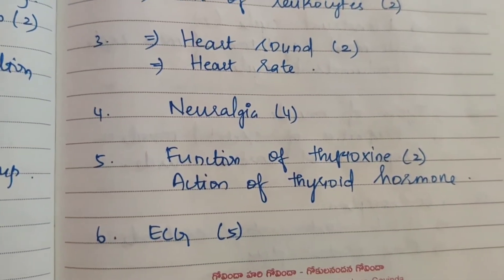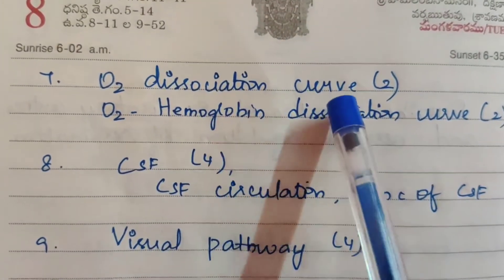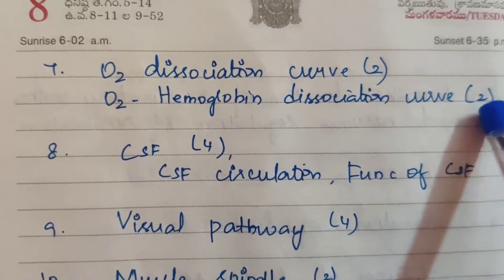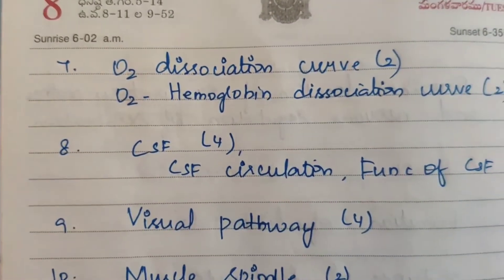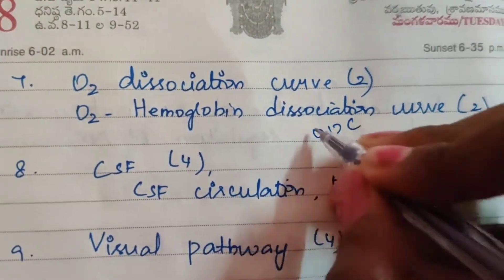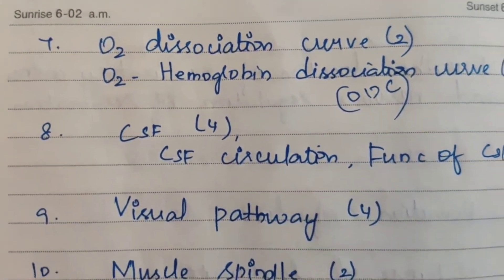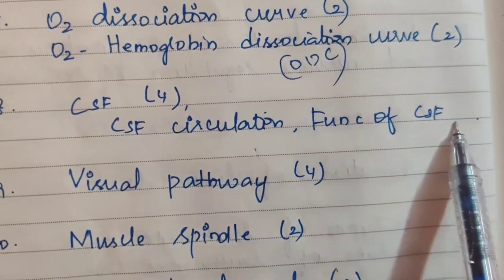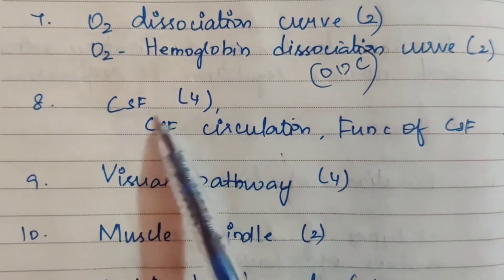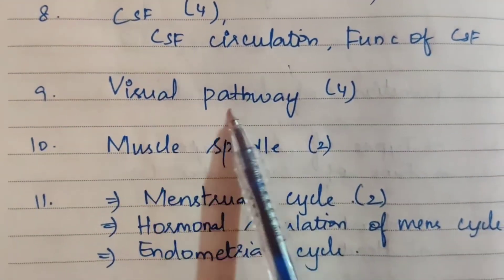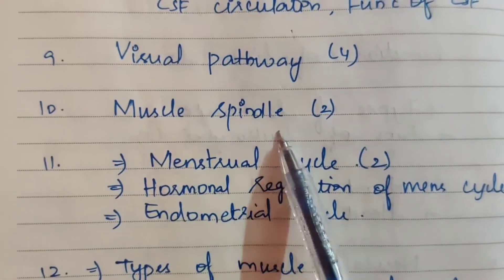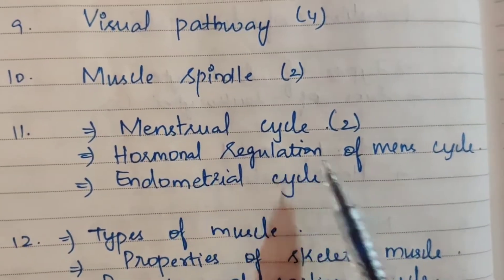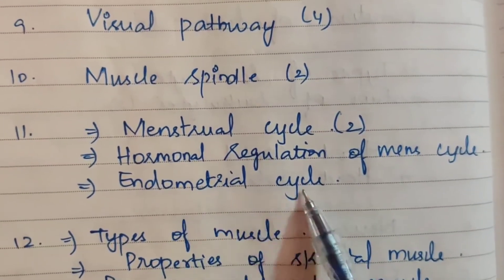Functions of leucocytes. Third: heart sounds — two times; heart rate. Fourth: neuralgia. Fifth: function of thyroxin — two times; action of thyroid hormone. ECG — asked five times; electrocardiogram. Next: O2 dissociation curve — two times; O2-hemoglobin dissociation curve — two times (also called ODC). CSF — cerebrospinal fluid — asked four times; CSF circulation and function of CSF. Ninth: visual pathway — four times. Tenth: muscle spindle. Eleventh: menstrual cycle — two times; hormonal regulation of menstrual cycle; endometrial cycle.